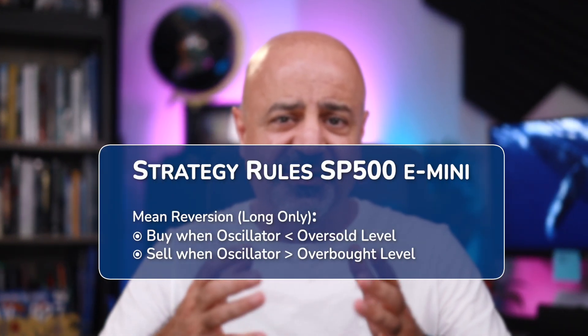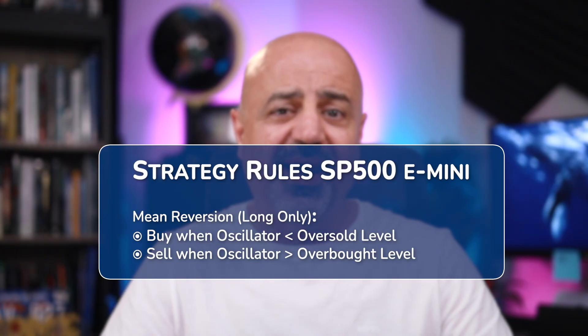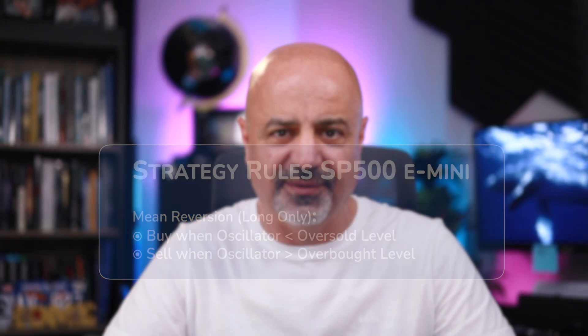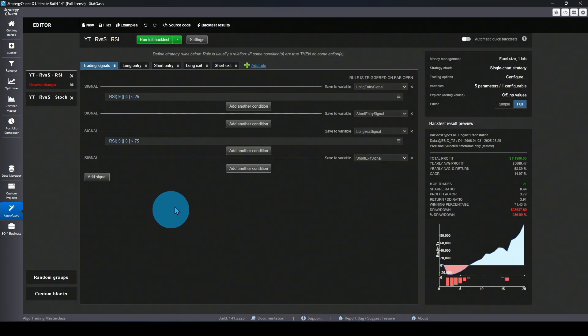To answer that question, we need a level battleground. I'll be using the S&P 500 e-mini futures on daily bars, so both indicators use the same data. The strategy is simple: go long when the oscillator is in the oversold area, and exit the trade when the oscillator is in the overbought area. I'll optimize over all available values using Strategy Quant X.